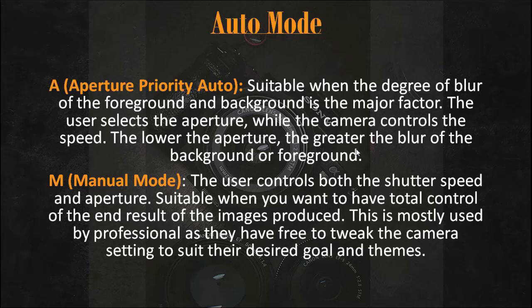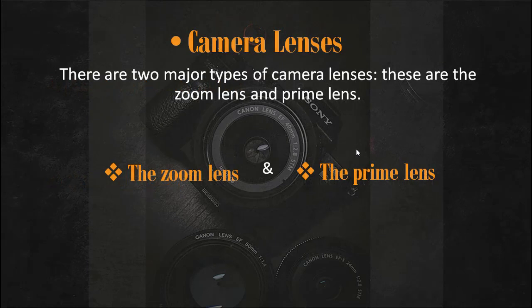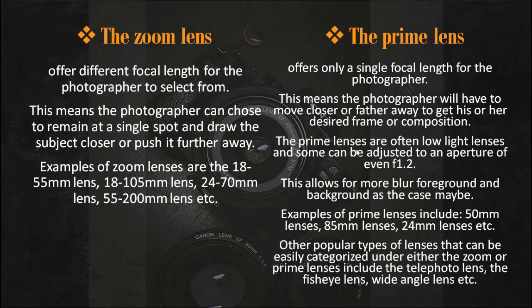We are limiting our discussion of the mode dial to these major modes because as a professional photographer you should decide what you get in your shoot — you don't allow the camera to totally control everything. The next topic is camera lenses. There are two major types: zoom lenses and prime lenses. The zoom lens offers different focal lengths for the photographer to select from, meaning the photographer can remain at a single spot and draw images closer or push them further away. Examples include 18-55mm, 18-105mm, 24-70mm, and 55-200mm lenses.